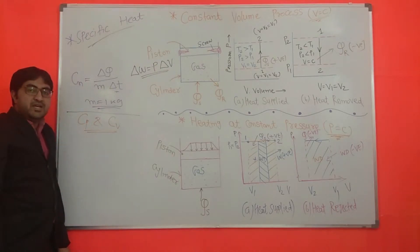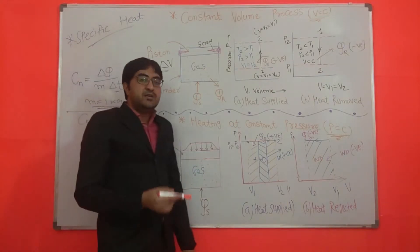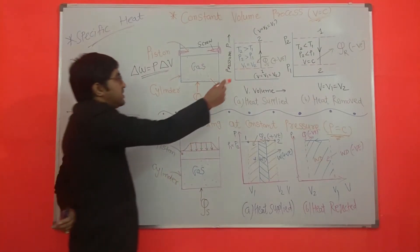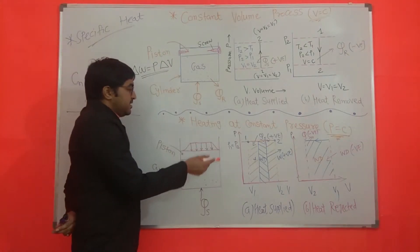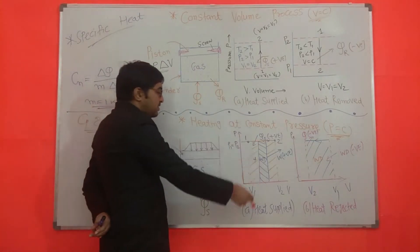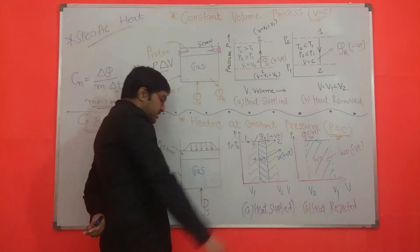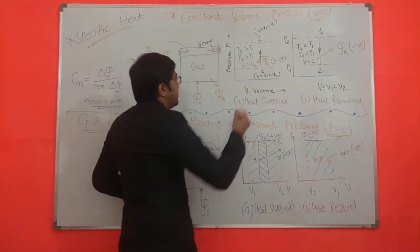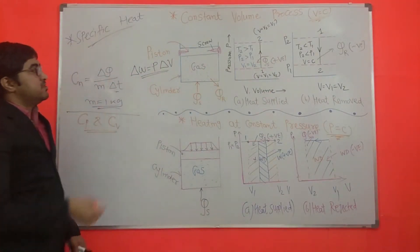Gases are compressible in nature. So in case of gases, we can supply heat energy by two methods. The first is the constant volume process, where throughout the process volume remains constant. In the second case, heat is supplied to the gas by a constant pressure process, where throughout the process pressure remains constant. A process means when the system passes through a series of steps.